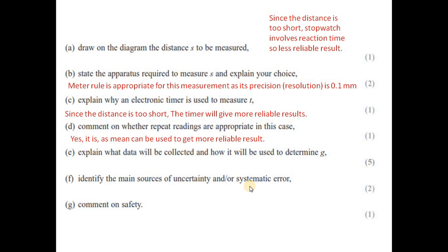Part f, identify the main sources of uncertainty and systematic error. Main sources of uncertainty, we have a parallax error because we are using meter ruler. There might be a systematic error in timer. Comment on safety. It involves low voltage so we don't have any hazards regarding the voltage, but we have a steel ball falling down. We should take care of this falling object and we can wear a protective shield or safety shoes.